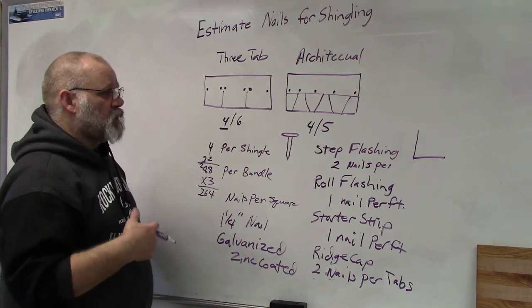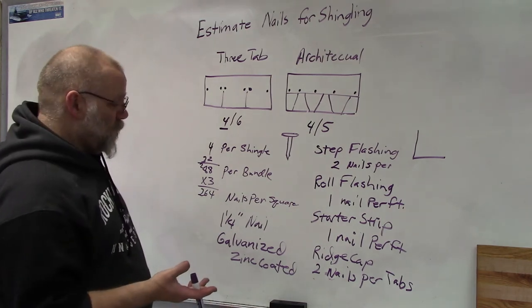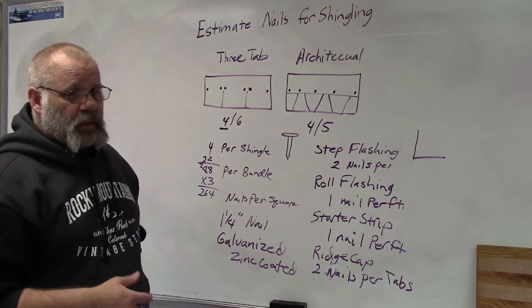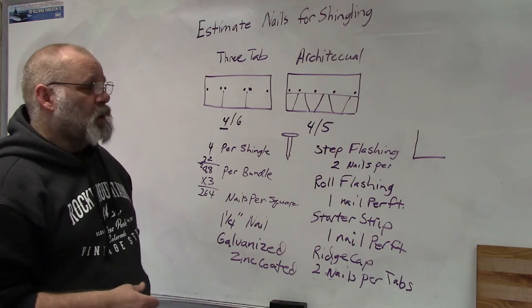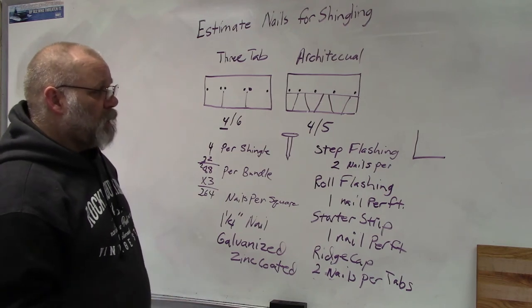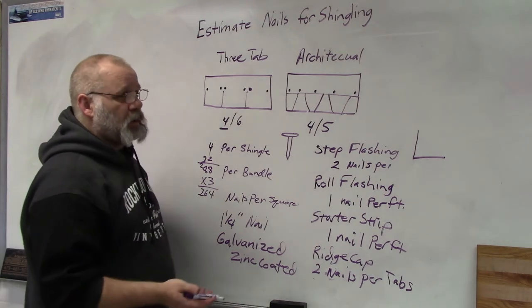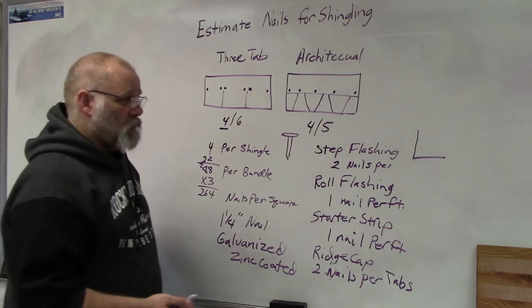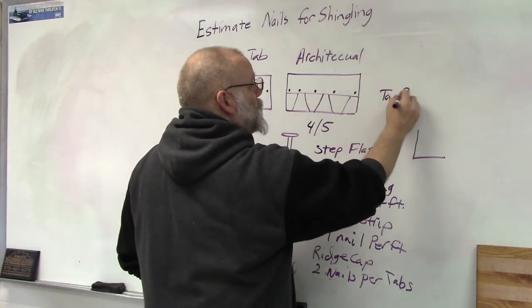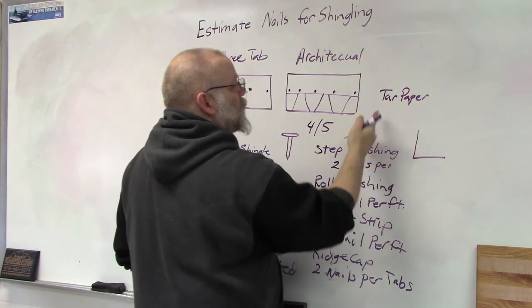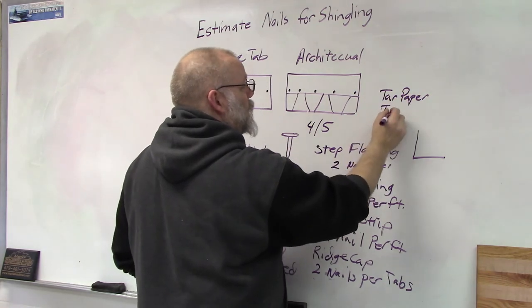If you don't use staples to nail down your either your ice shield or your tar paper, then you would have to figure out, you'd have to add nails for that also. So if you're using nails for your tar paper you'd have to figure that in, or your ice shield you could figure nails for that.